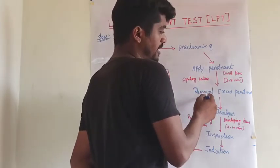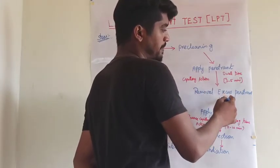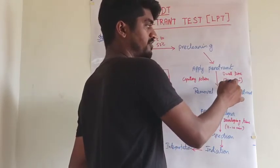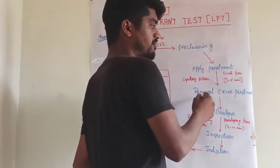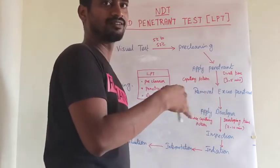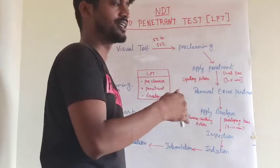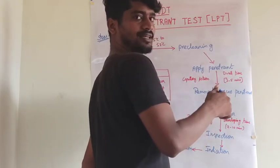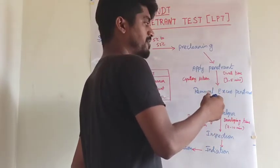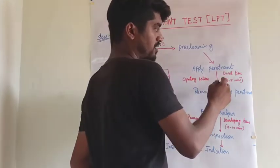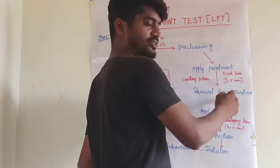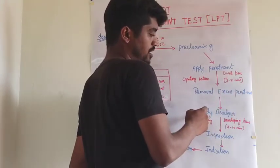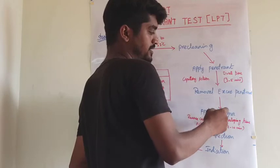The next step is removal of excess penetrant. After the dwell time is completed, we have to remove the excess penetrant from the surface of the metal. The removal of excess penetrant is done by cloth removal. There are many types. After the dwell time, we remove the excess penetrant and then apply the developer.